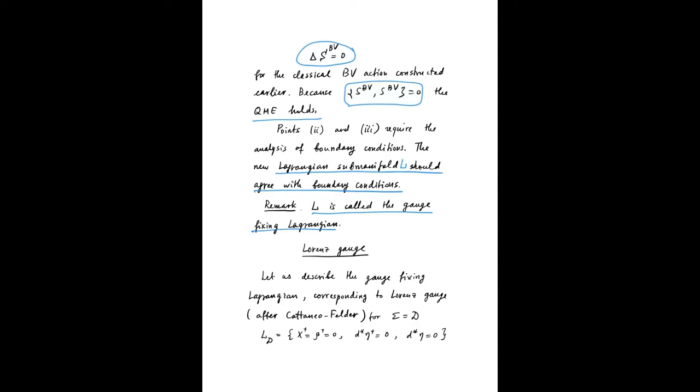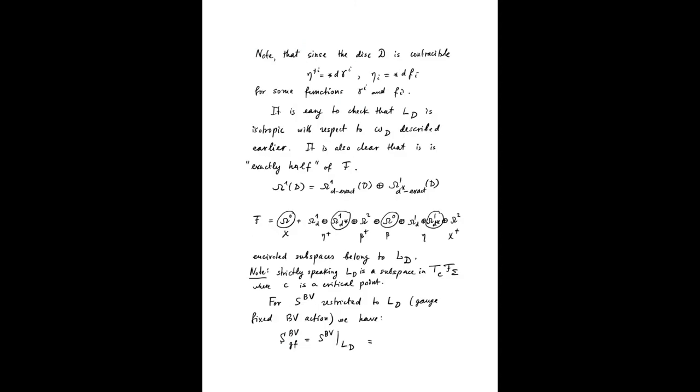Now, let's look at Lorentz gauge. We will follow this paper by Cattaneo and Felder on path integral for the Poisson-Sigma model and Kontsevich's star product. Here's the description of this Lagrangian. It's a subspace in the space of BV fields for the disk, where x̃, B̃ are zero, η̃ satisfies this constraint, and d-star of η is also zero.